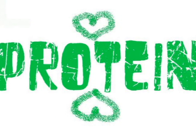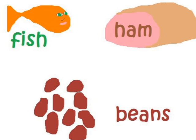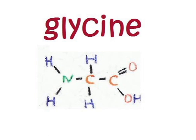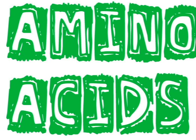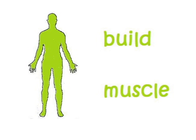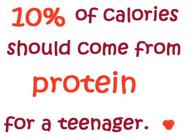Protein. Food examples include fish, ham, and beans. A chemical example is glycine. Its structural representation is shown. The subunits are amino acids. The primary role in the human body is that it protects the immune system. It also builds muscles.